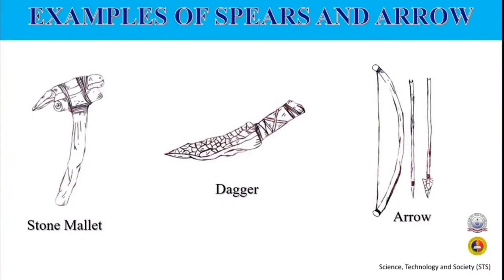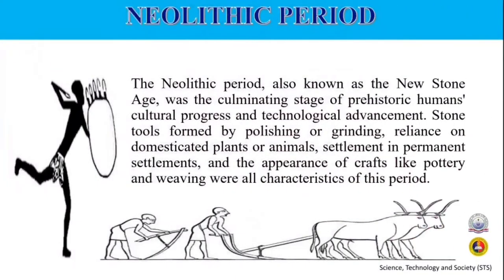The Neolithic period, also known as the New Stone Age, was the culminating stage of prehistoric humans' cultural progress and technological advancement. Stone tools formed by polishing or grinding, reliance on domesticated plants and animals, settlement in permanent settlements, and the appearance of crafts like pottery and weaving were all characteristics of this period. It came after the Paleolithic period, or the age of chipped stone tools, and before the Bronze Age, or the first period of metal tools.